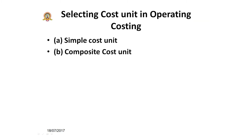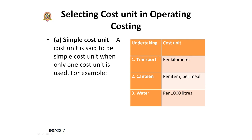Next, we need to understand what cost units we choose to calculate the cost of an operation or service. There are two types of cost units to select from: a simple cost unit or a composite cost unit. A simple cost unit is when only one cost unit is used. For example, in a transportation company, you calculate the cost per kilometer.